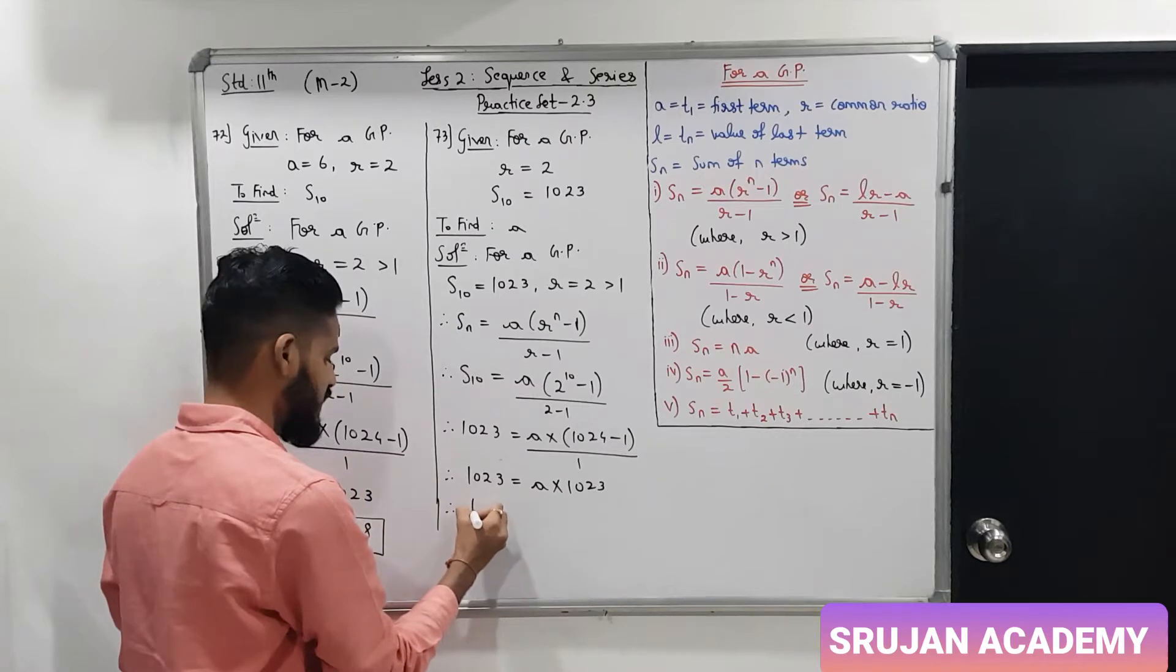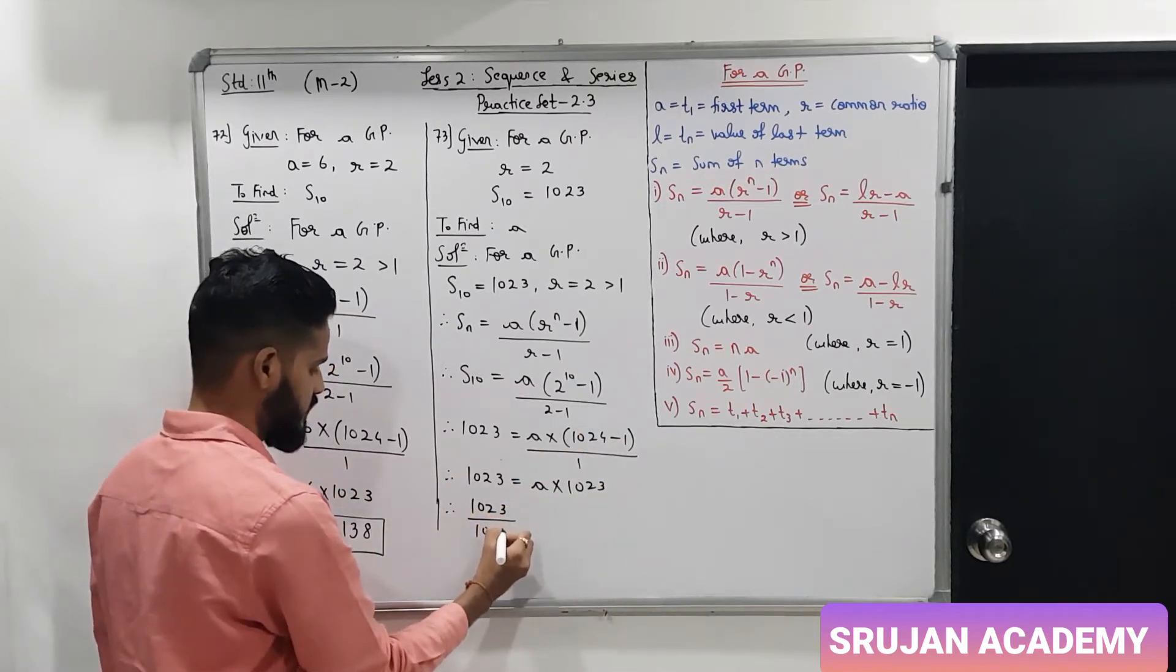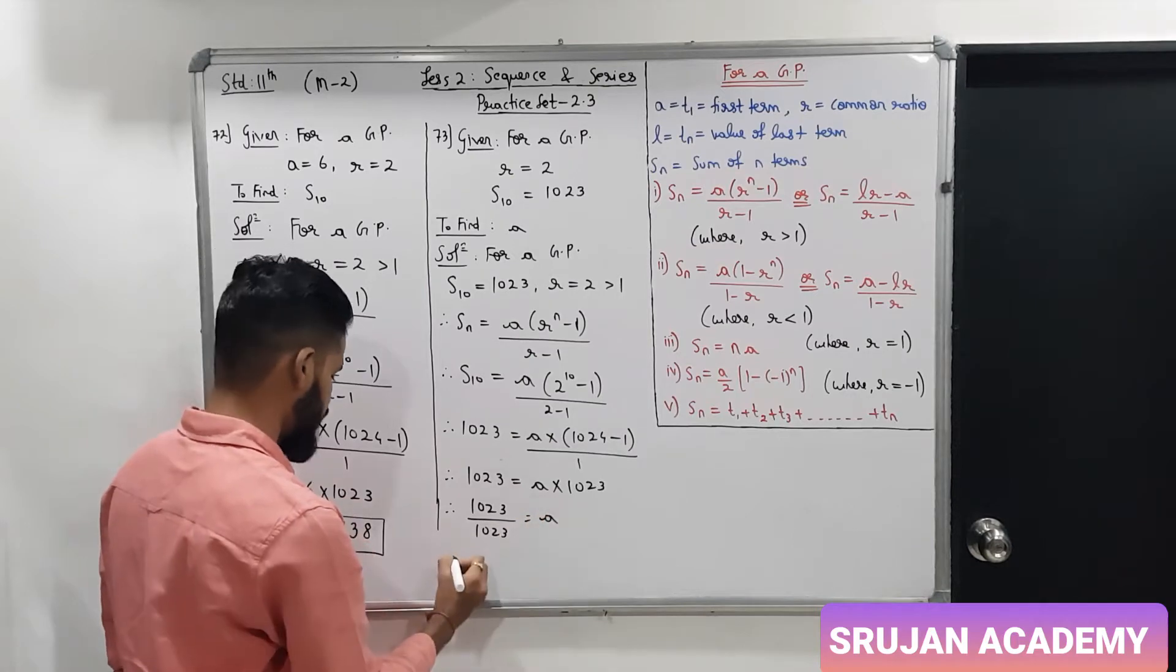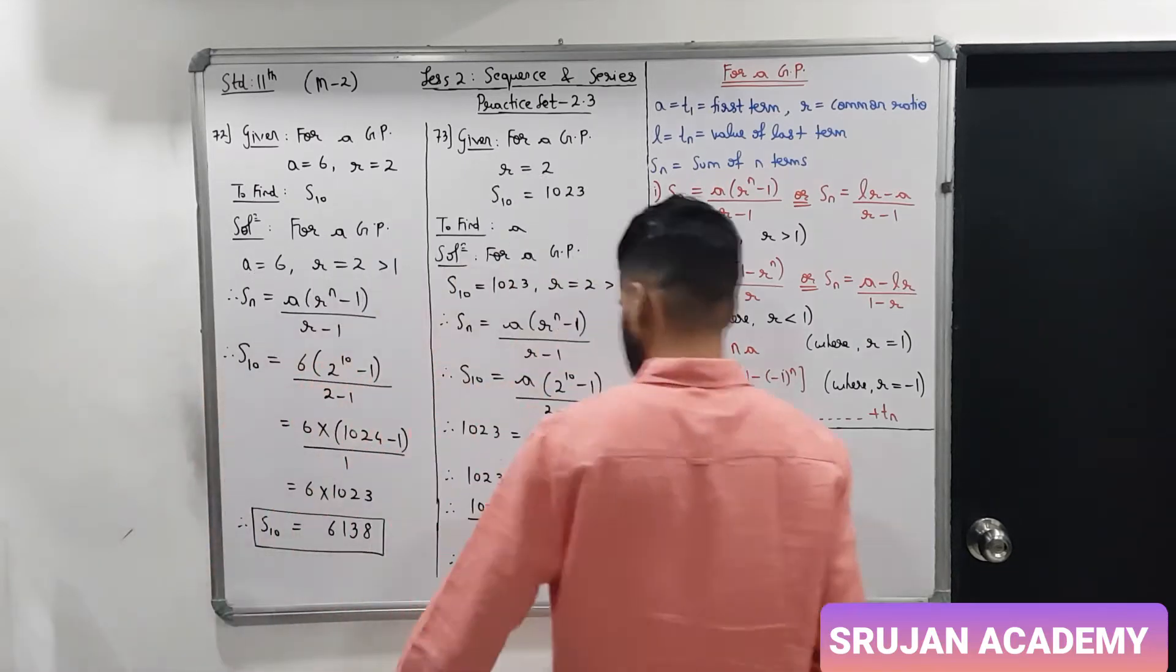So, this is 1023 equals a into 1023. But this 1023 multiplication on right side with a will come to left and divide. And 1023 upon 1023 is 1. So, a is 1 and the value of the first term is 1.